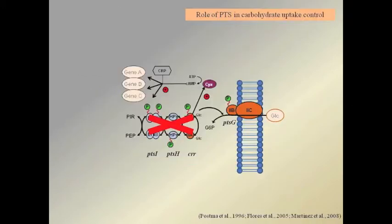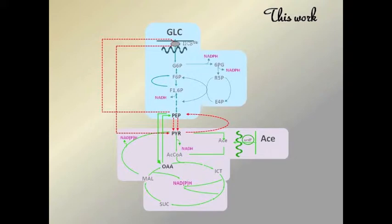Due to the elimination of the IIA glucose component from the PTS system, these strains can consume simultaneously secondary carbon sources in the presence of glucose. Taking into account this capacity, we additionally blocked the PYK, PFK, and PPS genes and describe the effects of these knockout mutations on the physiology of E. coli PTS- strains during co-utilization of glucose and acetate.